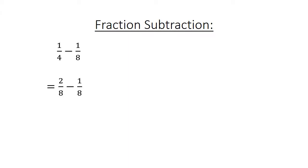Fraction Subtraction: 1 over 4 equals 2 over 8. Minus 1 over 8. You find the lowest common multiple. Equals 1 over 8.